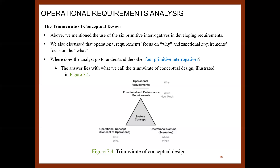In this figure we have a triangle with the system concept in the middle, and in each corner a description. At the top we have operational requirements, which answer the question 'why' — why do we need this system. We also have function and performance requirements, which focus on 'what' — what functions or actions the system will perform.